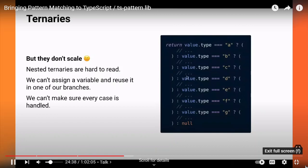There's also another issue: I always need to return a value for the else case. But if I know that the type is one of a finite set of known values, I really don't want to have to return something in the else case, because I know it's never going to happen. What I'd like instead is to have TypeScript check that I'm handling all the cases properly — I shouldn't have to provide a fallback value.